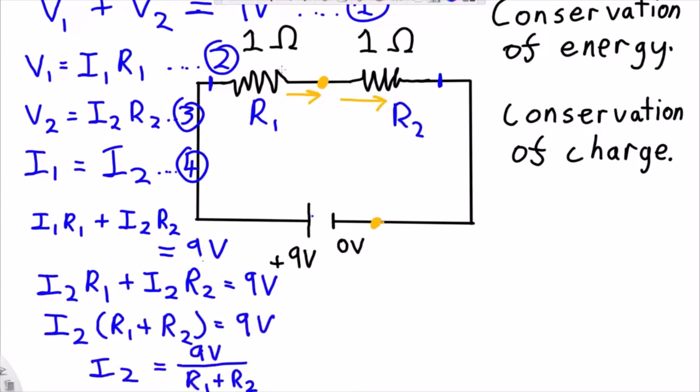And in this case, I know that both R1 and R2 are equal to 1 Ohm each, so that gives me 9 volts over 2 Ohms, which is equal to 4.5 Amps. So, now I've worked out the amount of current that is flowing through this circuit.